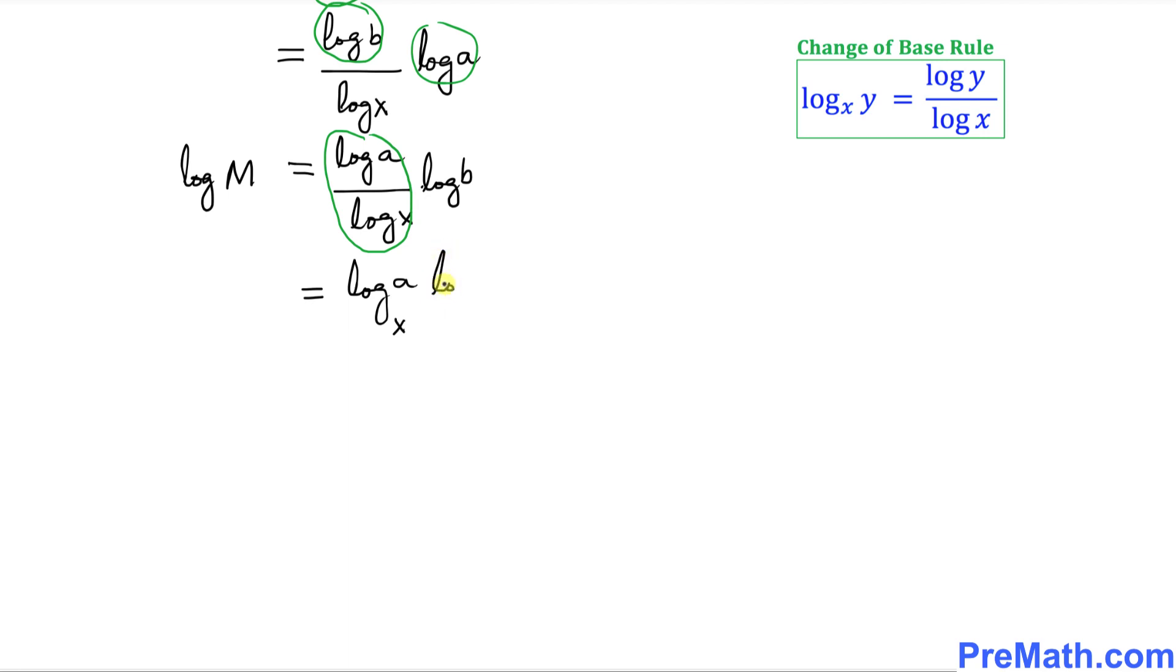And now, once again, we're going to use this power rule. You see, this is in front of log of b. I want you to move this back and put it as an exponent of b. So I can write this as log base x of b to the power of log base x of a. And we got log of M on this side. Be careful, this whole thing becomes the exponent of b.